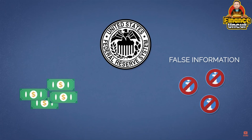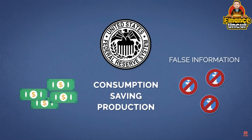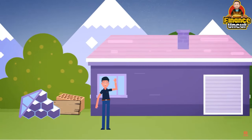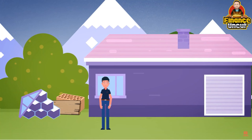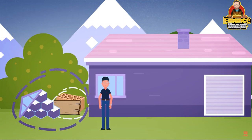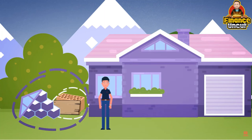The central bank policy tricks entrepreneurs into thinking that there are more resources available for new investments than there really are. In doing so, the central bank disrupts the natural market coordination between consumption, saving, and production, leaving market participants with false information. The entrepreneurs now think there are enough saved resources to finish their present investments and reap profits in the future — but there is a mismatch.